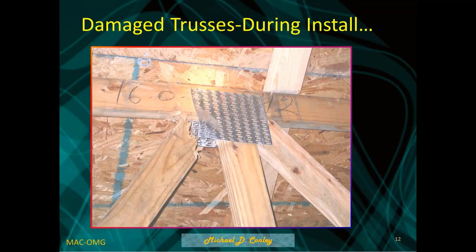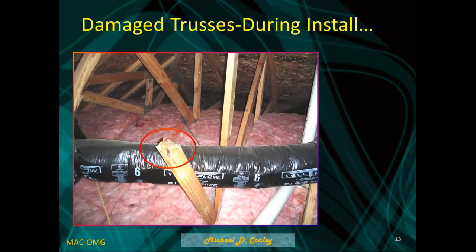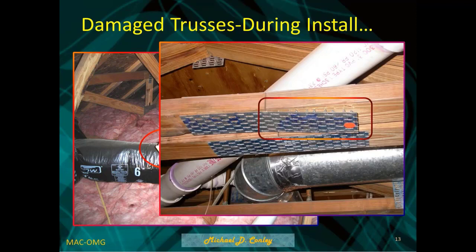Damage during installation is very common. Broken members because of or during installation do occur. Misplaced gang plates are also an issue — the general rule for a gang plate is it needs to be tight up against the wood. If there's more than a 1/16 inch gap, it's considered defective. They do allow up to 1/16 inch, which is not a lot. When you see them in poor condition, they're definitely not going to function as designed.